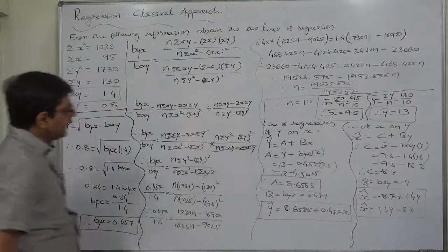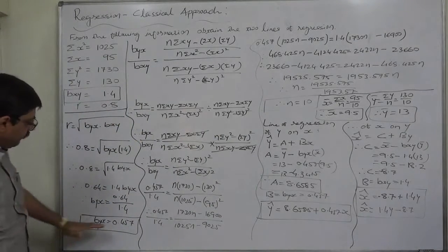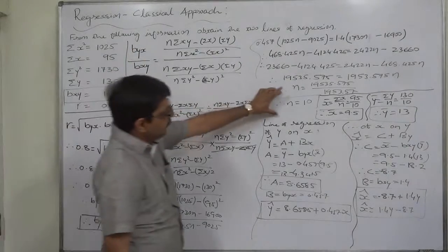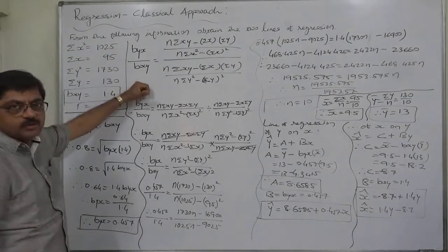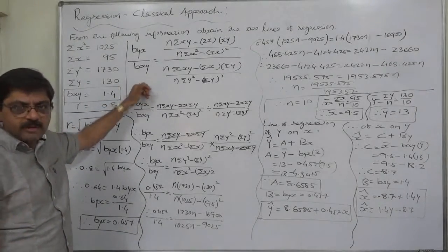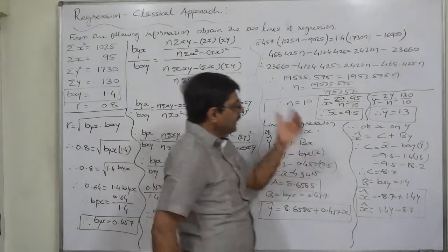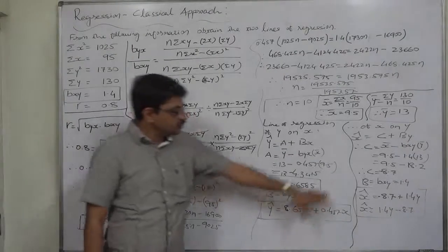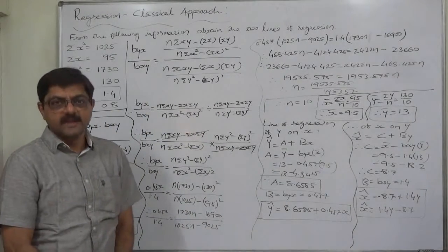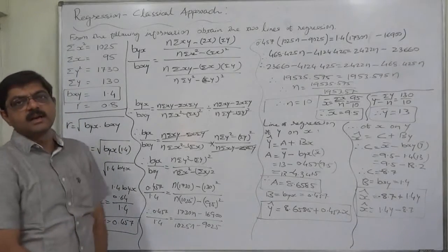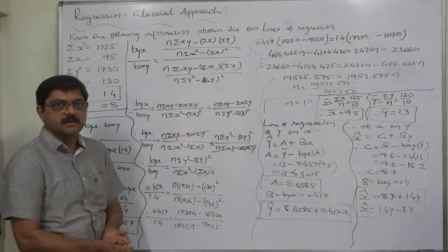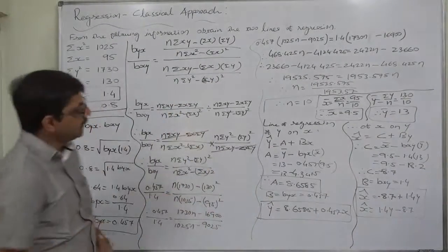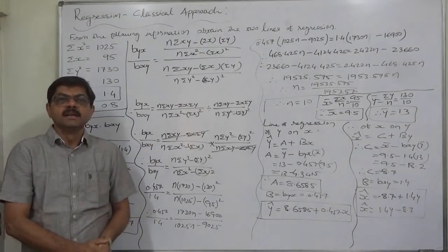In this way, with incomplete information, we first found byx using the relationship between the regression coefficients, then found the approximate value of n using the ratio of byx to bxy, then found the two means, and finally obtained the two lines of regression. This is a special kind of case — after studying the whole chapter confidently, then I advise you to attempt this kind of problem. Thank you very much.